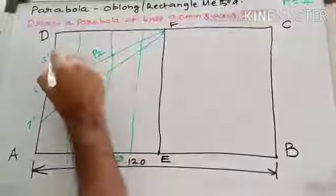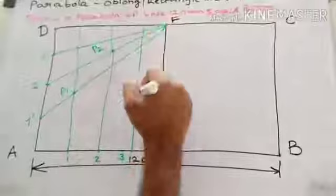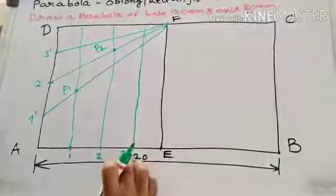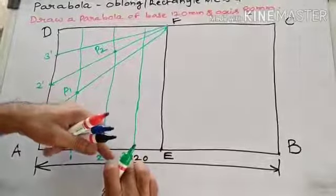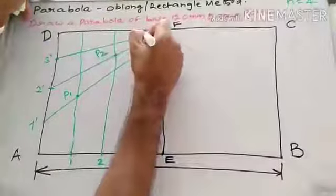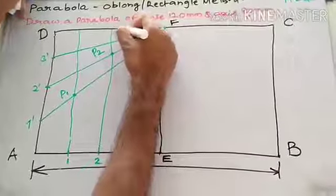3 dash F. 3 dash F. This 3 dash F line is intersecting at the point passing through third point. This line. So, this is P3.